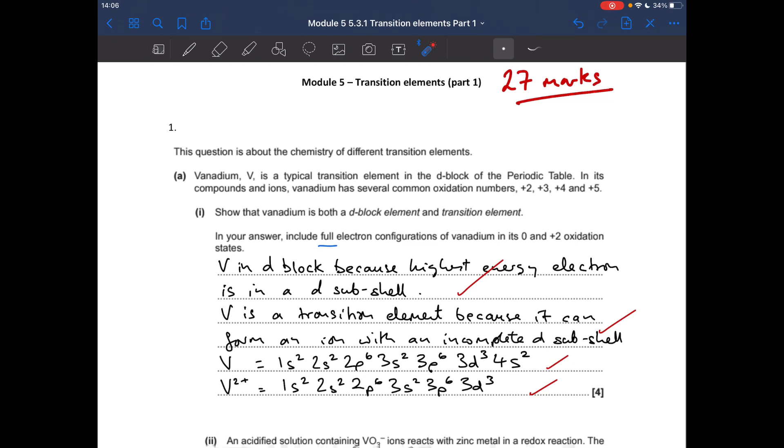So zero oxidation state electron configuration is that. You can put 4S before 3D if you want, that's fine. And the V2 plus electron configuration, remember you have to lose the 4S electrons before you lose 3D. So because it's 2 plus, we need to lose both of those.